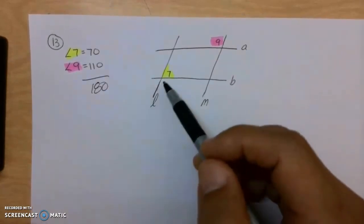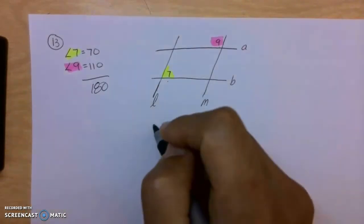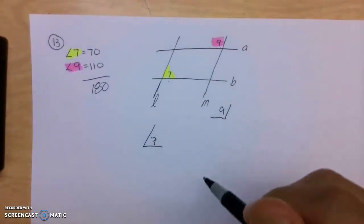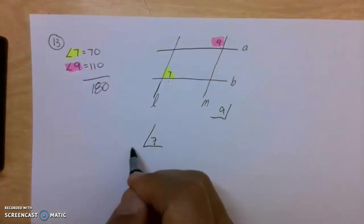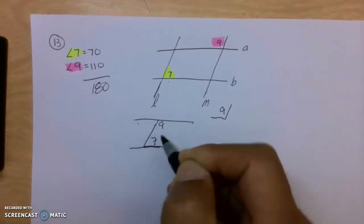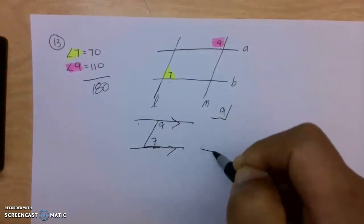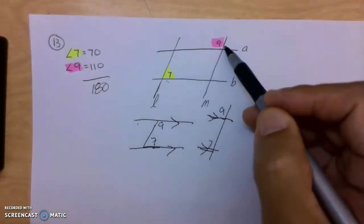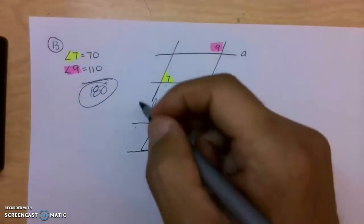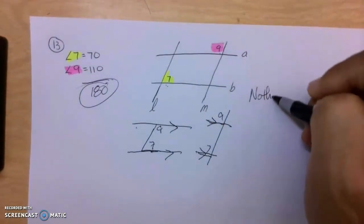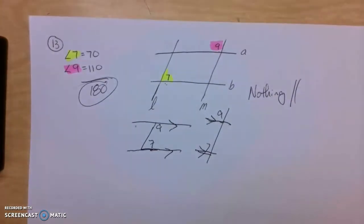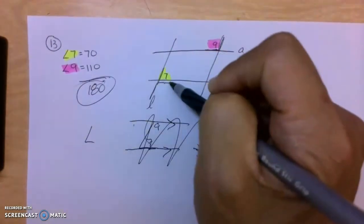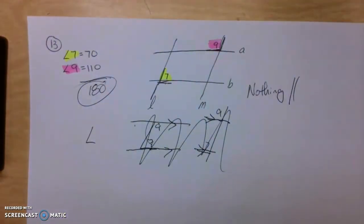The only problem here is this yellow and this pink are not hit by any one type of transversal. Here's angle 7, here's angle 9, and no one line — two lines are going to be parallel. Now if angle 9 was here going left to right, well then you could say these two lines are parallel. If angle 7 was down here, then you could again say that these two lines are parallel. But because angle 7 and angle 9, although they do add up to 180, that doesn't prove anything is parallel. So you would say nothing is parallel for number 13.